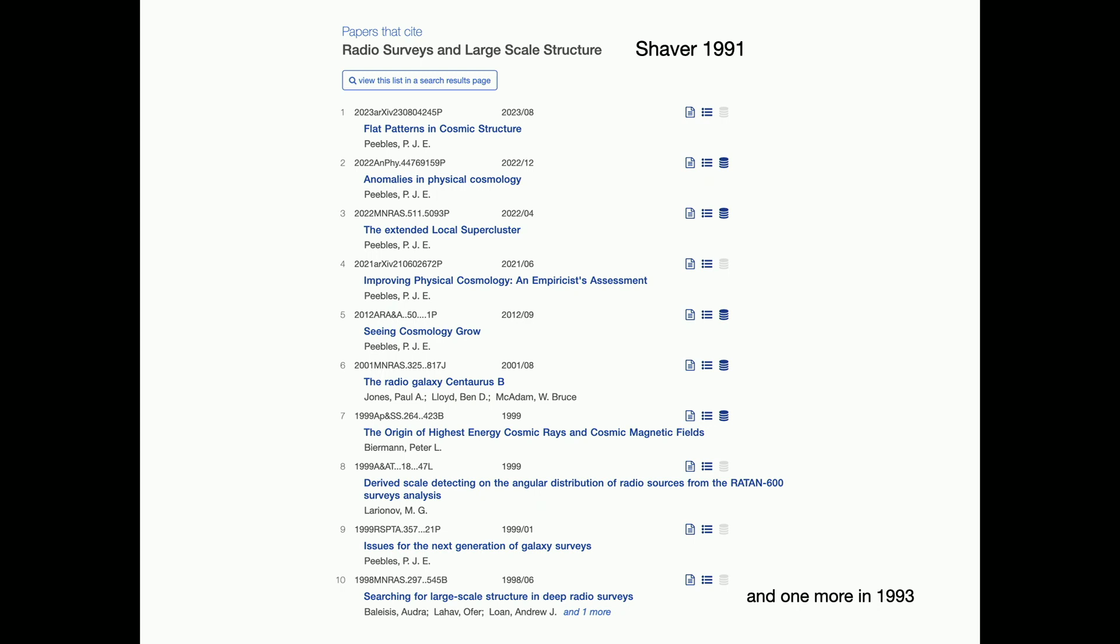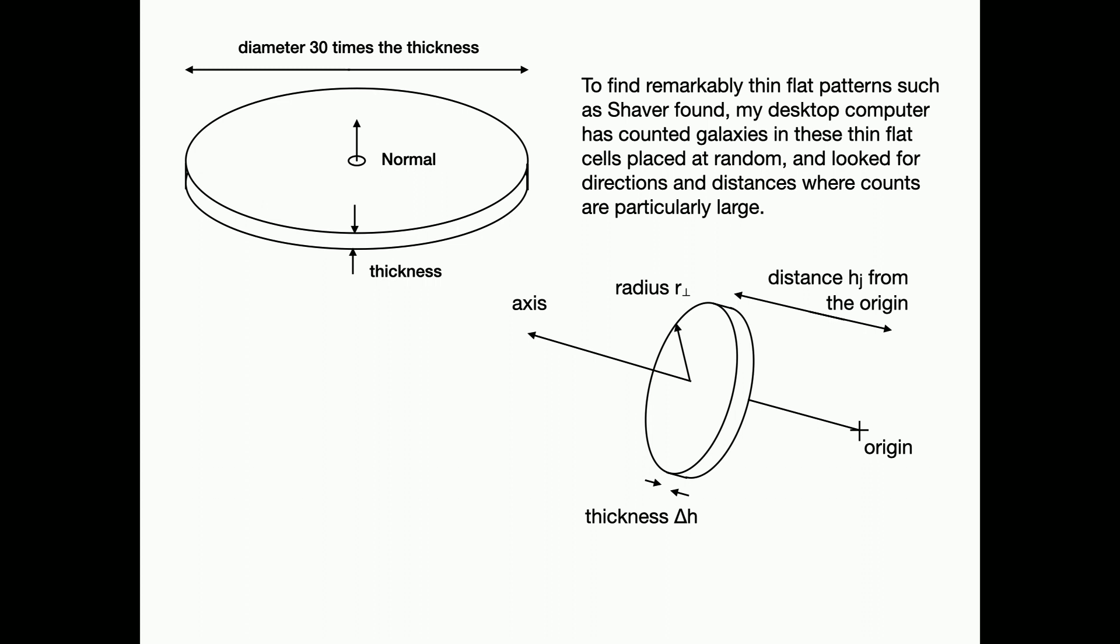So, I complain. Why aren't people talking about this phenomenon? Well, one measure of interest in this phenomenon, here are the ADS, Astrophysical Data System. Here is a list of papers that have cited Peter Shaver's 1991 paper. And you notice one here, here, here, here, here, and here. I'm the major contributor of citations of Peter's paper. Why are people so indifferent to this?